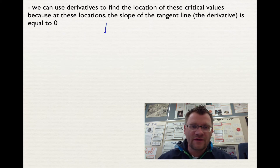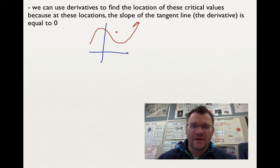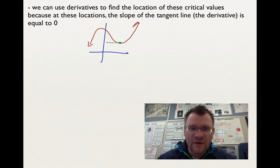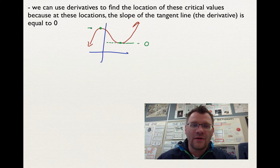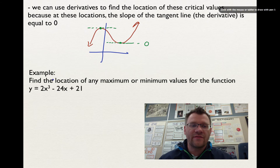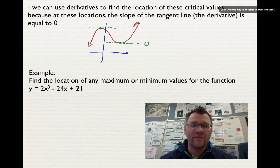I'll draw a quick sketch. If you look at the slope of the tangent line at a maximum — we talked about this in Physics 30 — the slope of that line is zero. So if the slope of the tangent line is the derivative, we know it's going to be equal to zero at the maximum point and equal to zero at the minimum point. We're going to use that information to answer this example: find the location of any maximum or minimum values for the function y = 2x³ − 24x + 21.